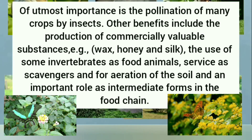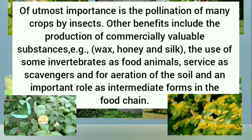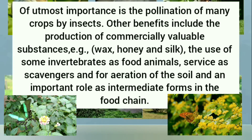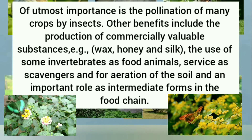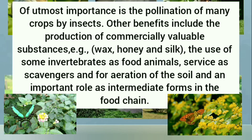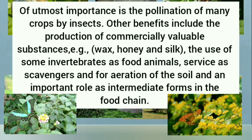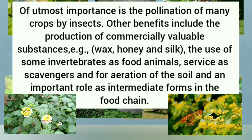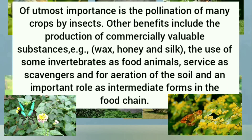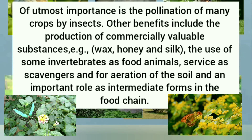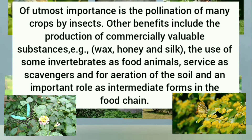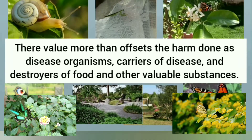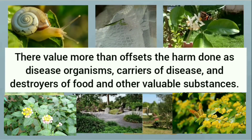Of utmost importance is the pollination of many crops by insects. Other benefits include the production of commercially valuable substances — for example, wax, honey, and silk — the use of some invertebrates as food animals, services as scavengers, aeration of the soil, and an important role as intermediate forms in the food chain. Their value more than offsets the harm done.